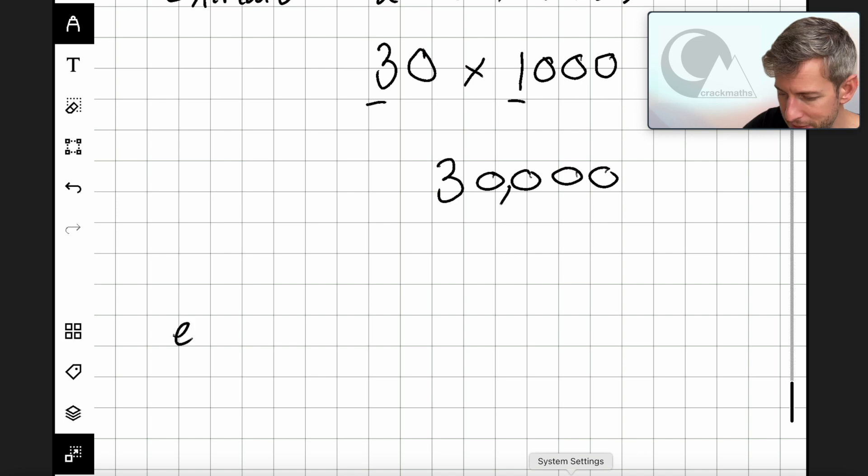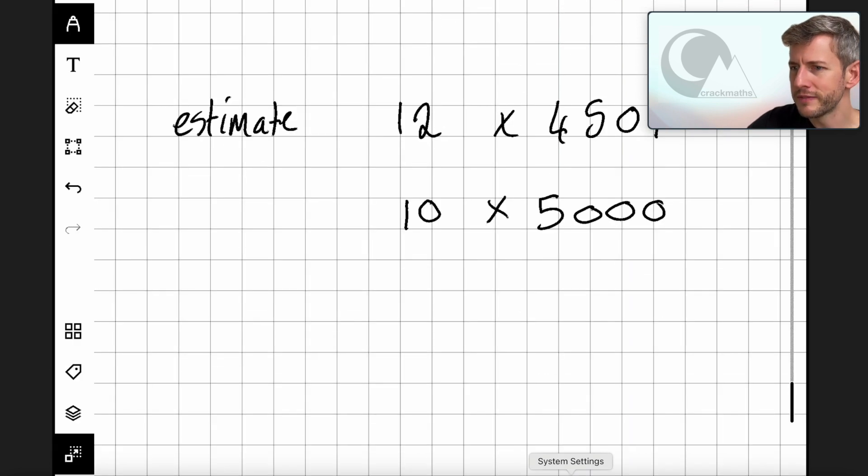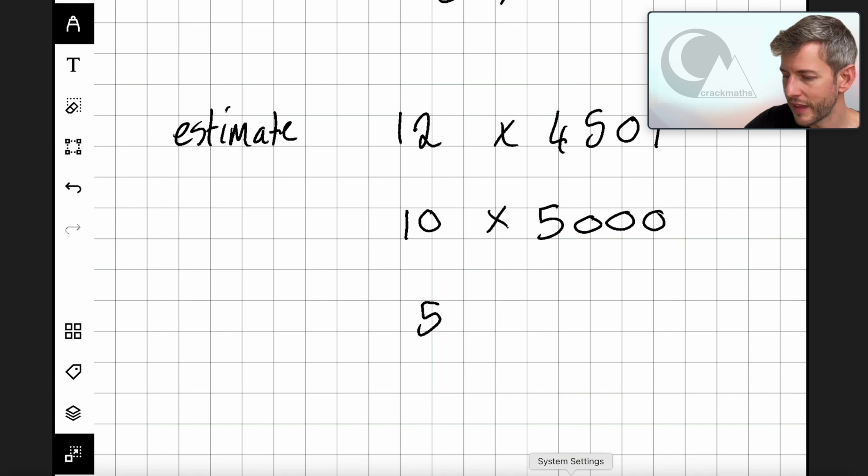I want us to try one more example and then we're going to move to some scenario questions. So let's have a look at estimate 12 times 4501. So 12 times 4501. So this is going to become 10, and 4501 is going to become 5000. And I can hear your despair because you know that 4501 is so far away from 5000, but this is still the way we estimate.